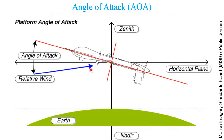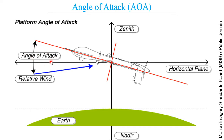Here we see a real case example. This is a drone and we can see the relative wind isn't horizontal — instead it is at some kind of angle. The angle between the blue line, the relative wind, and the red line, the chord line or the center line of fuselage, is known as the angle of attack.